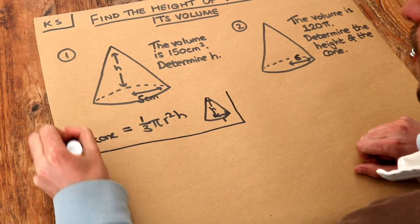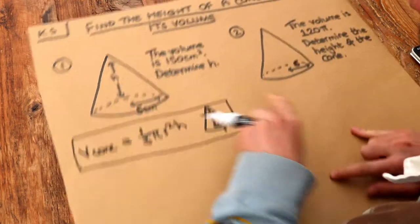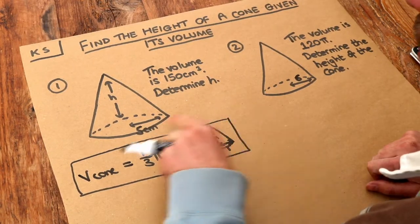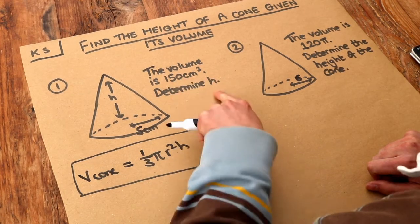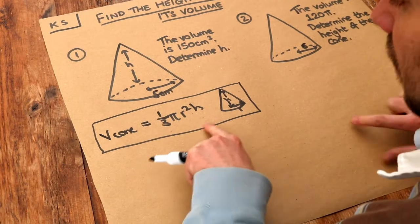So that's the formula we need, and we're just going to use that formula here. But this time around, rather than being given the radius and the height, we're given the volume and we have to work out the height.